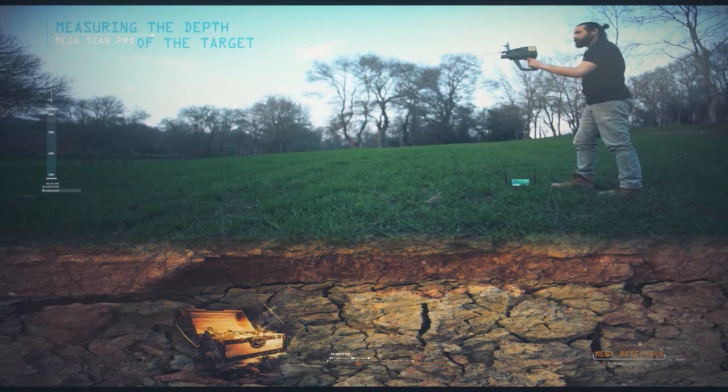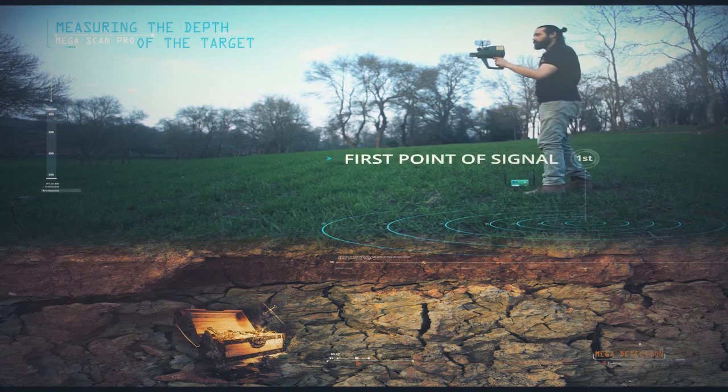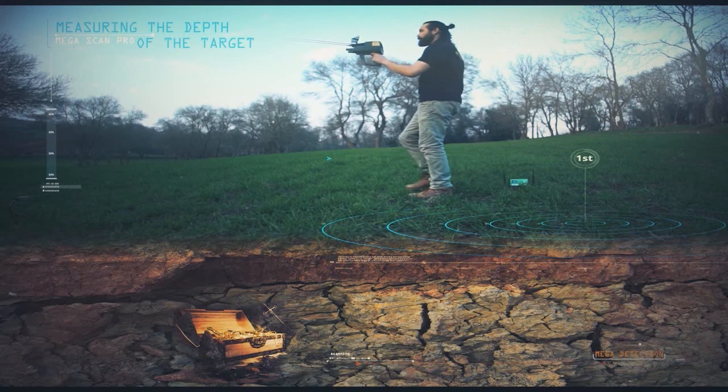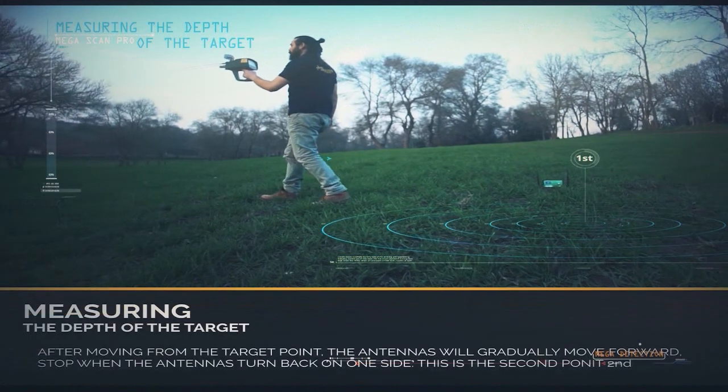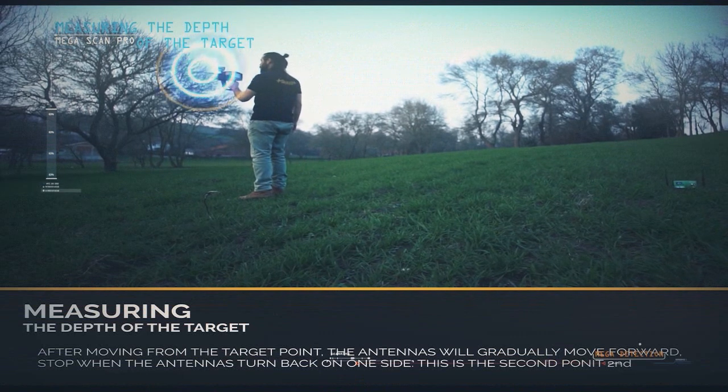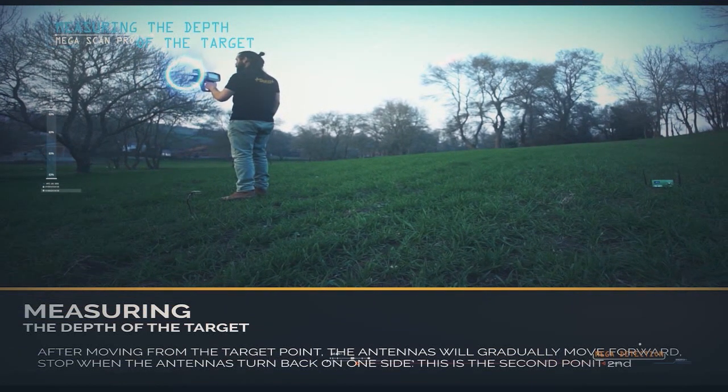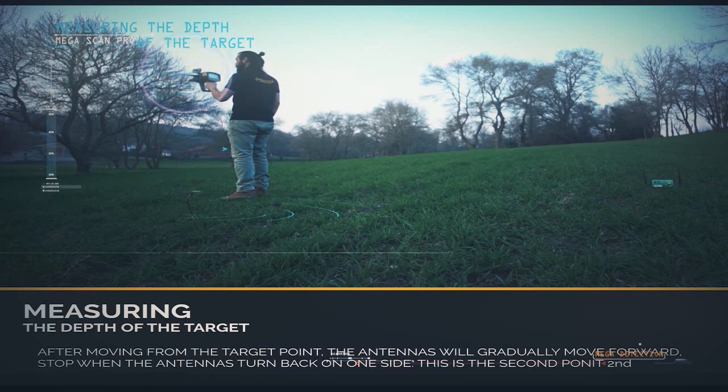Stand on the target and watch the antennas turn to one side—this is the first point of signal. After moving from the target point, you will notice that the antennas will gradually move forward. Stop when the antennas turn back on one side—this is the second point of signal.